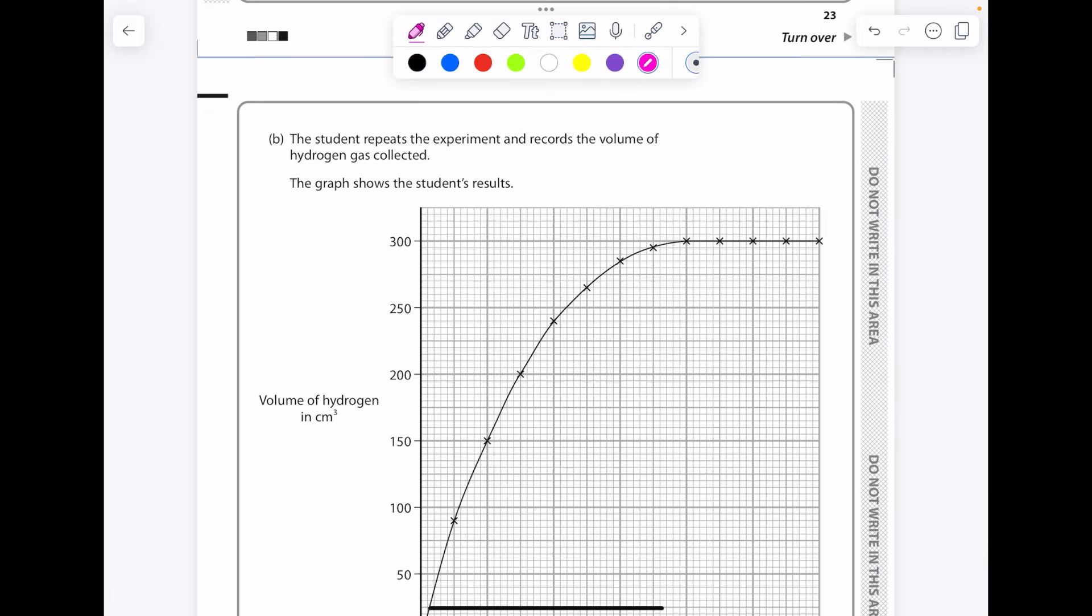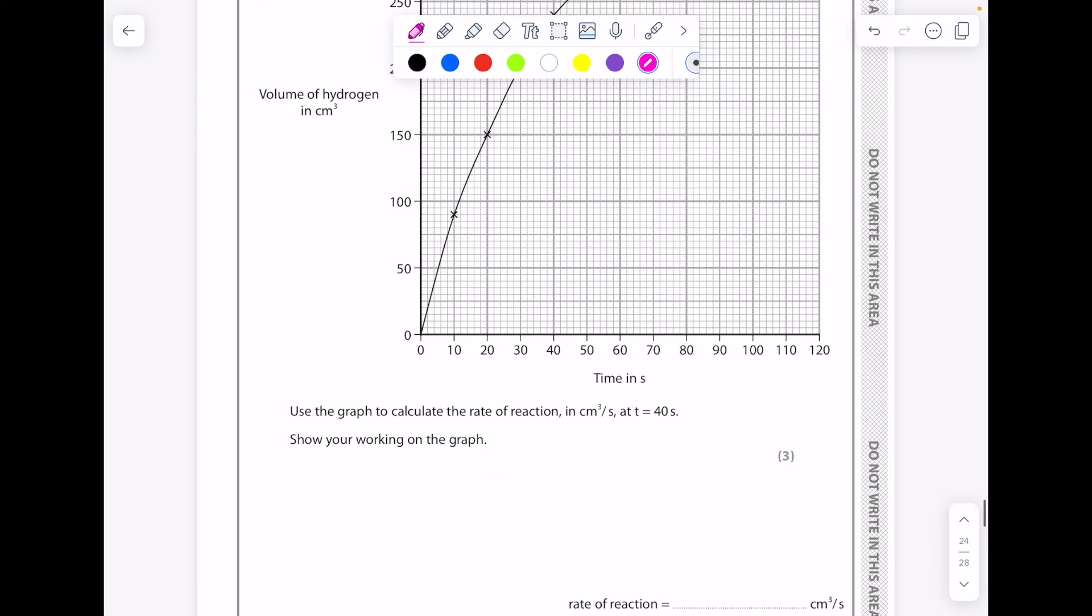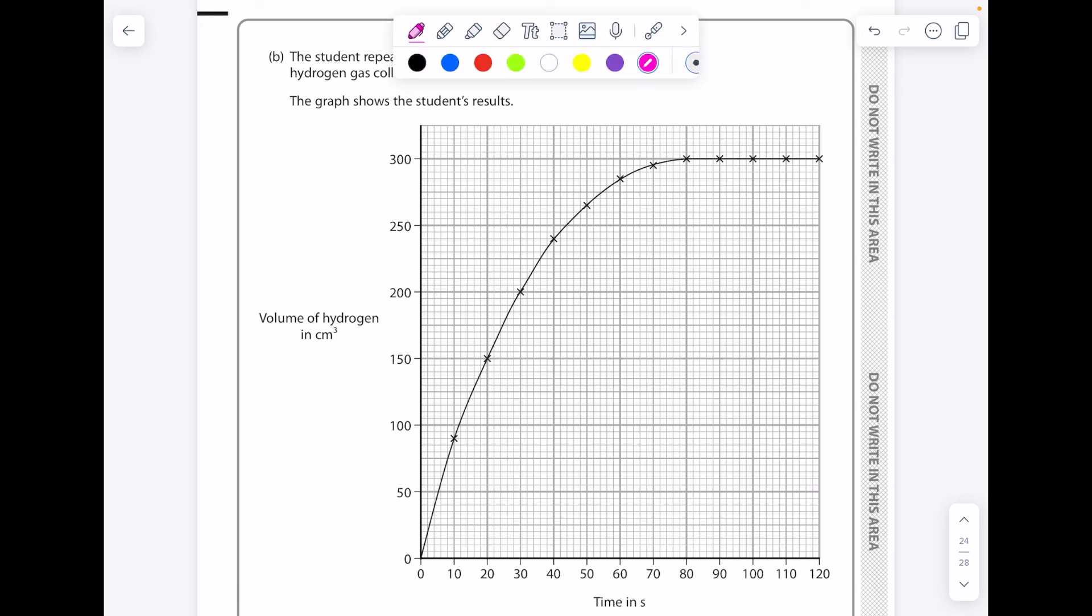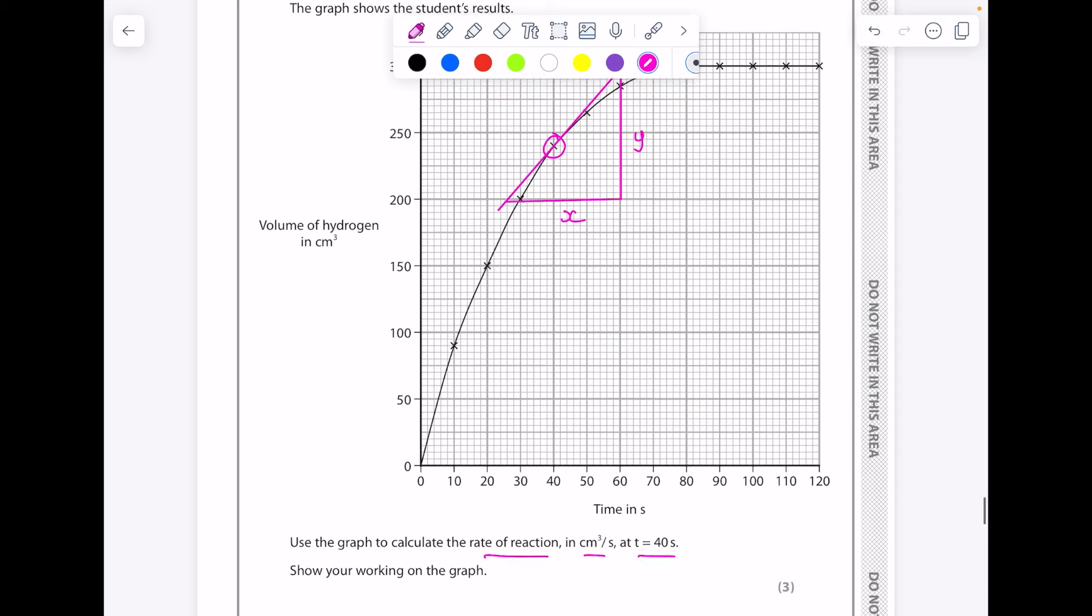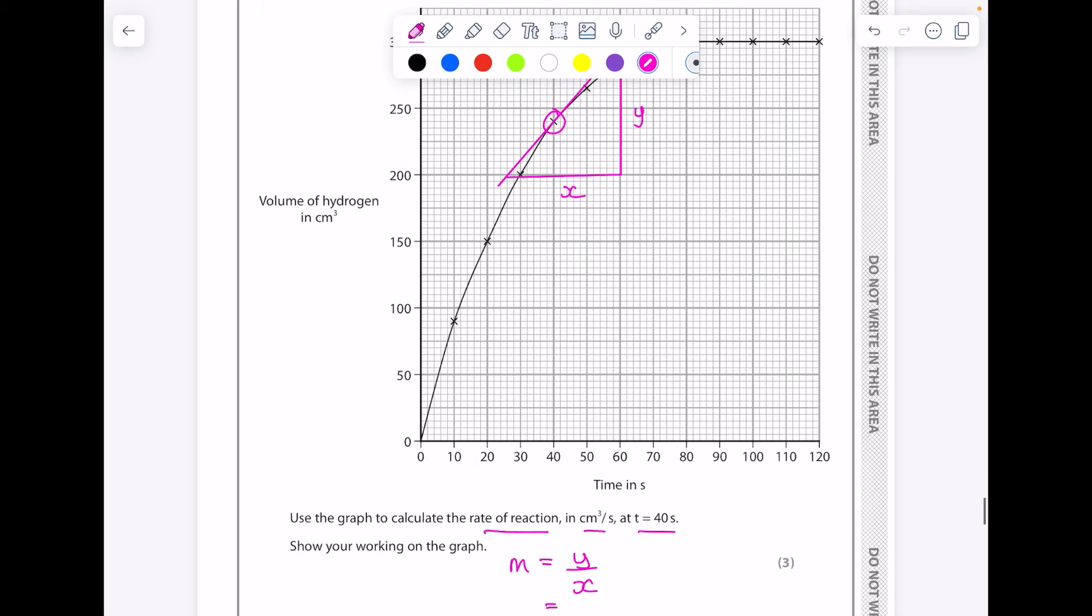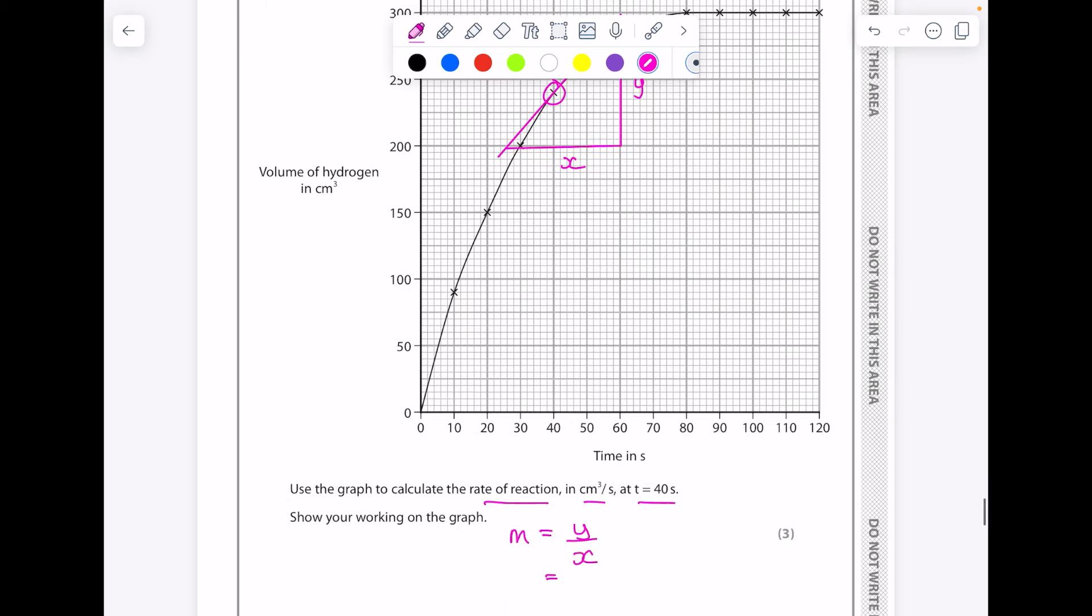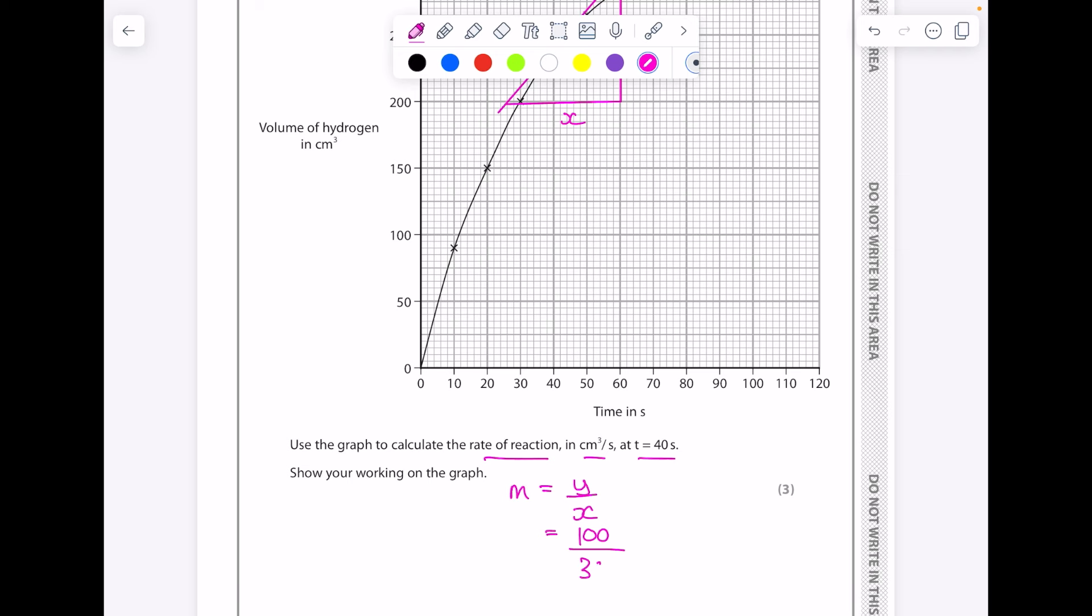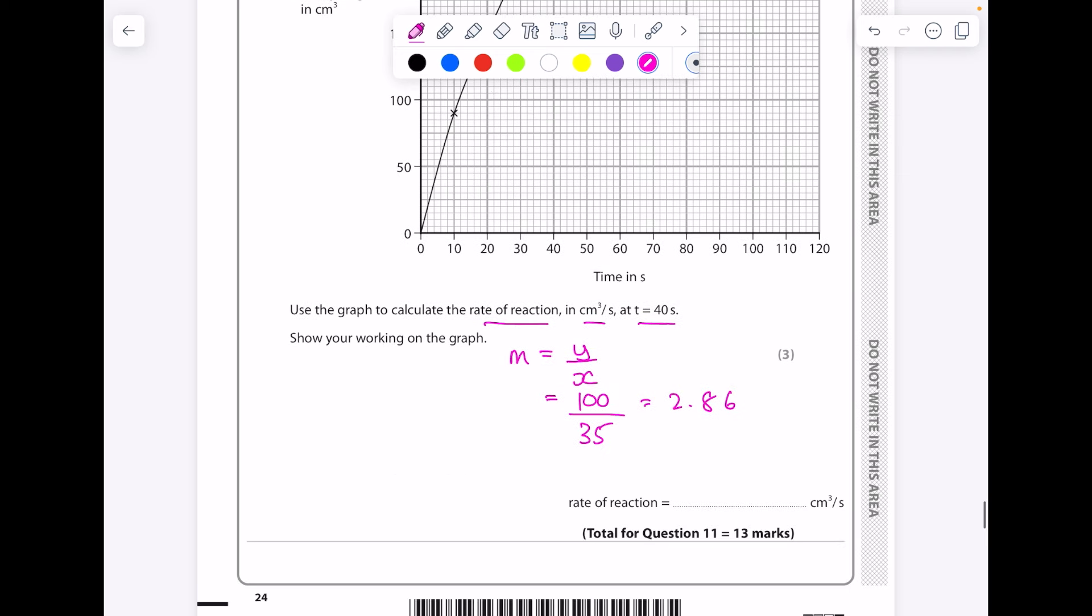The student repeats the experiment and records the volume of hydrogen gas collected. The graph shows the student's results. Use the graph to calculate the rate of reaction in cm³ per second at t equals 40 seconds. So first of all, we need to draw a tangent here, and then we need to find the gradient of that tangent by doing change in y over change in x. So the change in y is just 100 divided by the change in x, which is 35, to get 2.86. Your answer could vary slightly and there is room for that in the mark scheme.